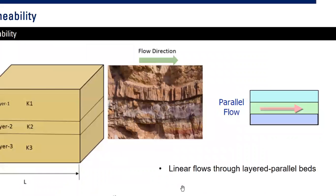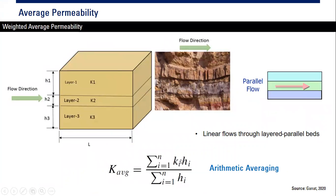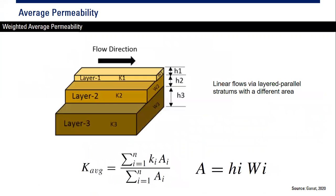For linear flow through layered parallel beds, we can average the permeability using arithmetic averaging. The formula is: k_avg = (k1·h1 + k2·h2 + k3·h3) divided by total thickness (h1 + h2 + h3). This is arithmetic averaging, and you need to know this.